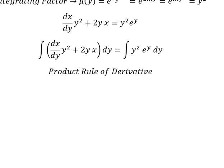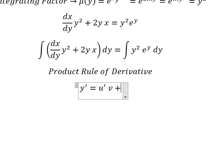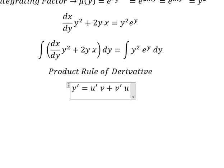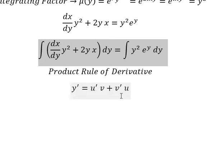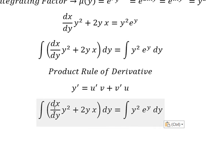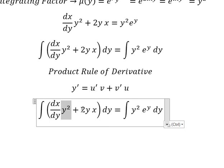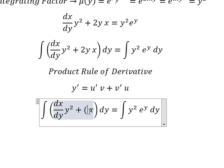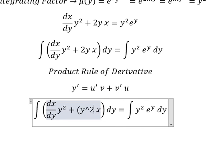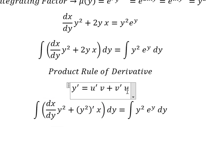Now we apply the product rule of derivative. So if we do the first derivative of y, we have the first derivative of u multiplied by v, plus the first derivative of v multiplied by u. So if we look carefully at this one, this is the first derivative of u multiplied by v, and this is the first derivative of v.